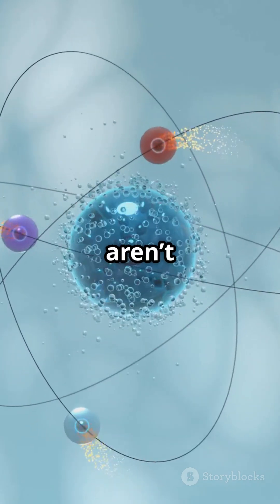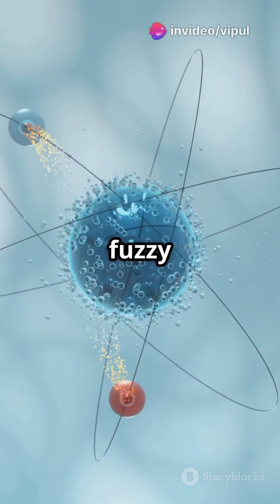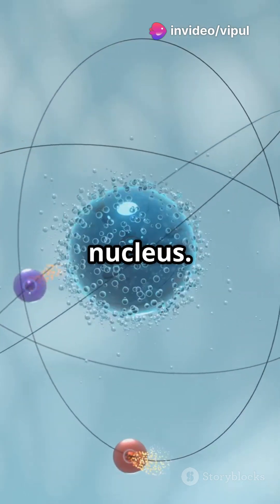So electrons aren't particles orbiting neatly. They exist in a fuzzy cloud of probability around the nucleus.